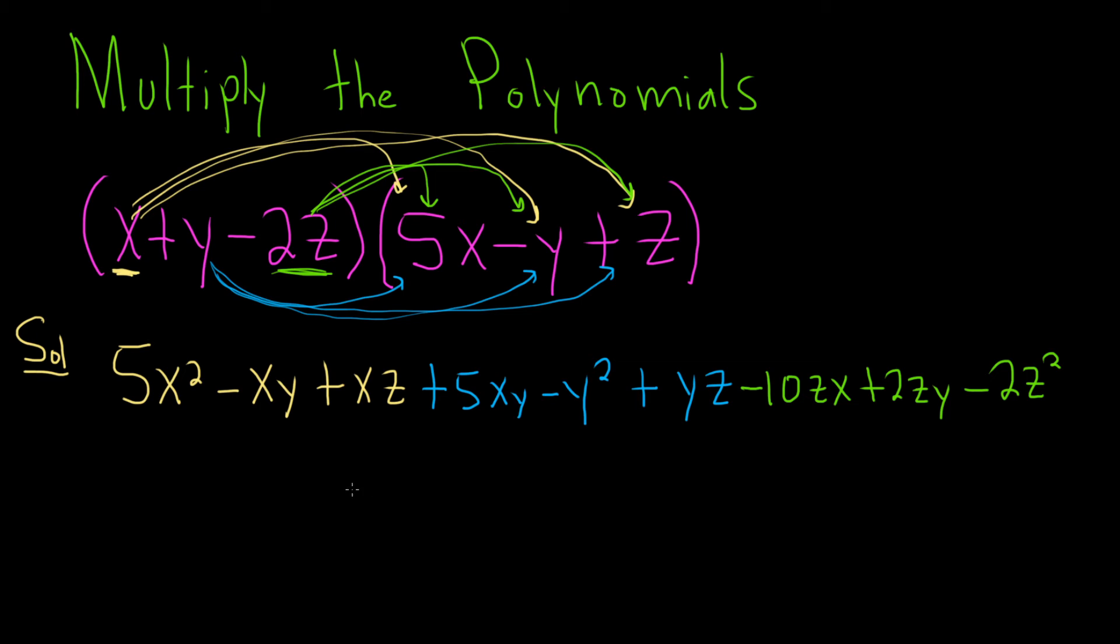All right, now we just have to combine everything and we will be done. So let's see, let's look at the x squared terms. I think this is the only one, so it'll be 5x squared. What about the xy terms? Looks like we have one here and one here. So that's going to give us 4xy because it's 5xy minus 1xy. So that's 4xy, so plus 4xy.